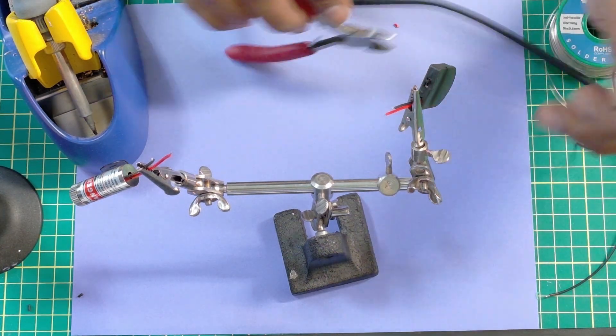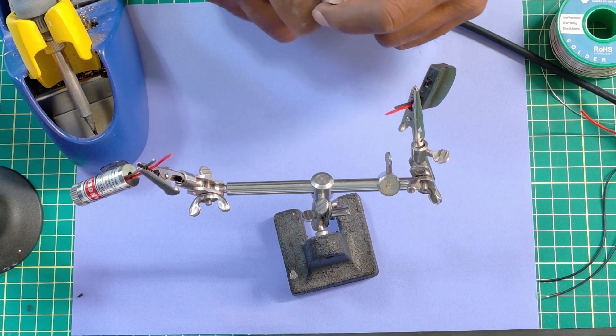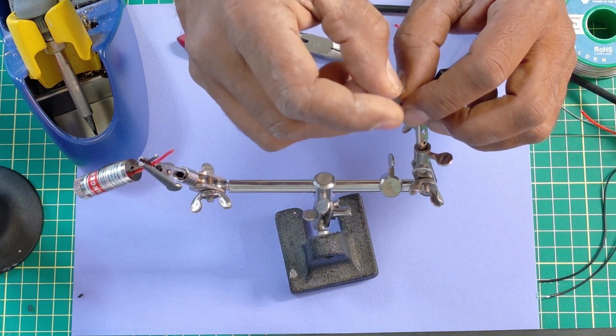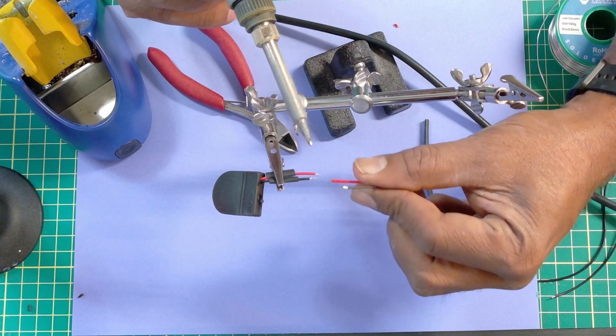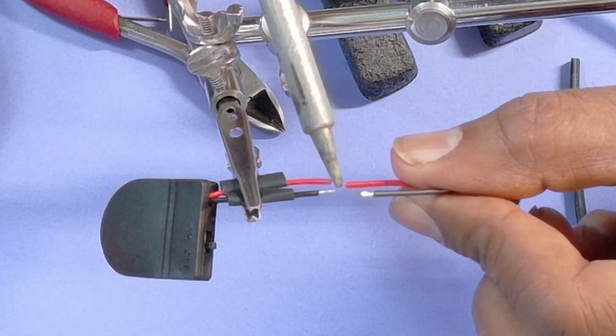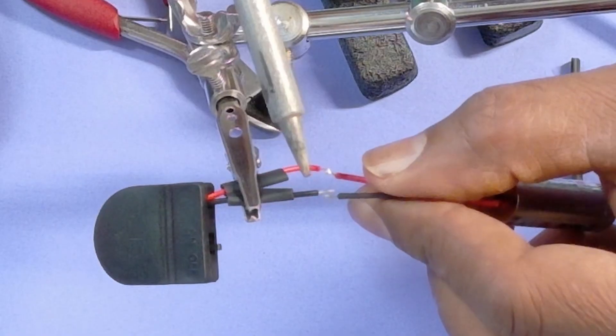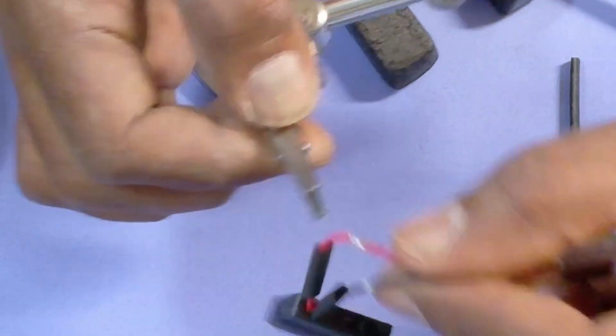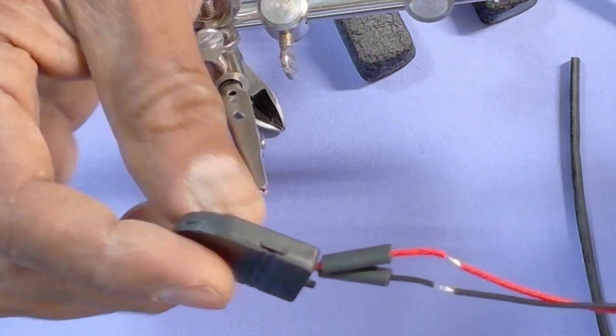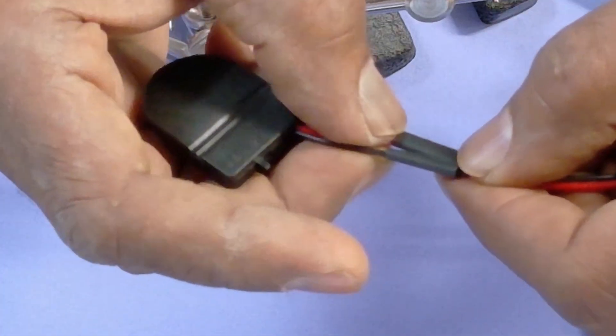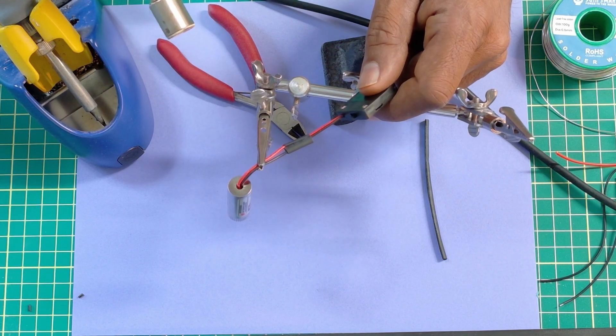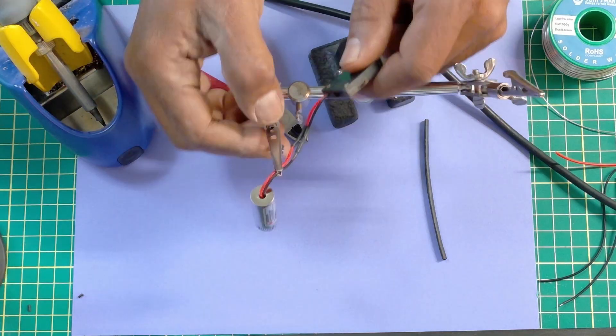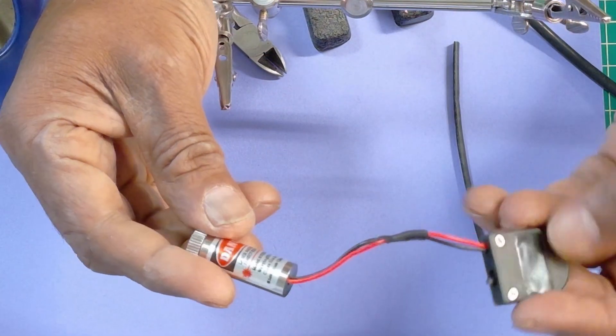Next thing you want to do is you want to put on a little bit of heat shrink tubing. Now we have a shortened length for both of them. Here's my trusty blowtorch. Let's get this up a bit. And there we go. So now we have heat shrink tubing on them.